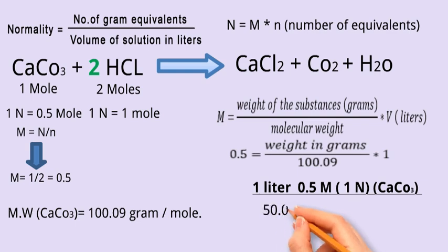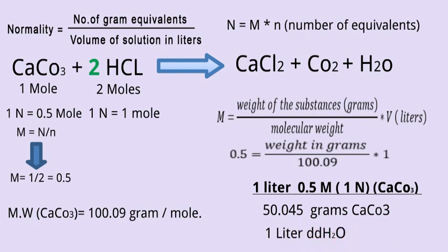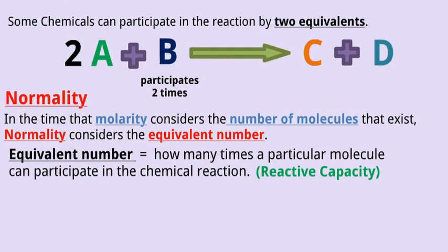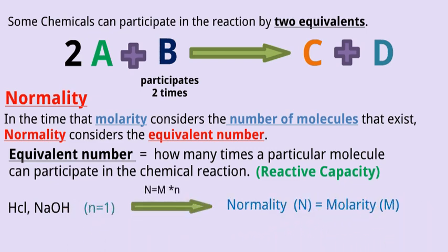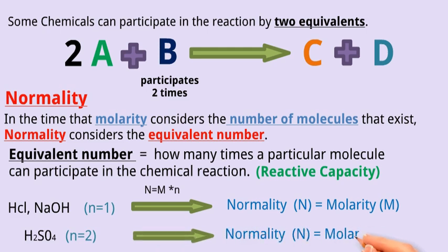Weigh 50.045 grams of calcium carbonate and add one liter of your solvent. It is also common to use normality with acids and bases like hydrochloric acid and sodium hydroxide. In this case, the equivalent number is equal to 1, so N equals M. But sulfuric acid, which can donate two hydrogen ions, has 2x reaction capacity, and the equivalent number is equal to 2, so normality is half of its molarity.